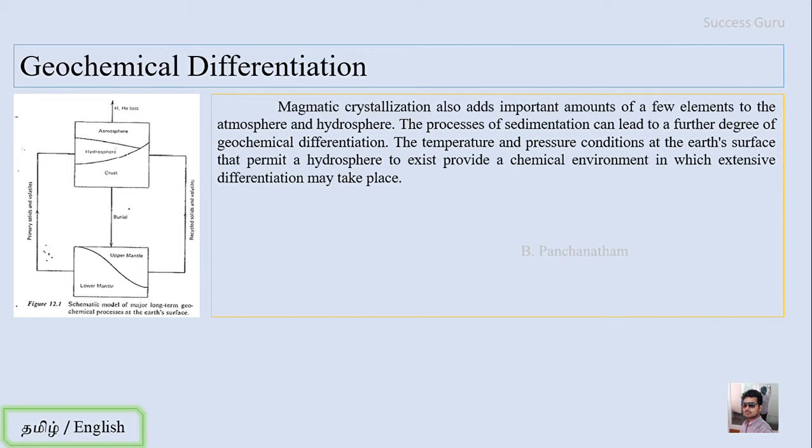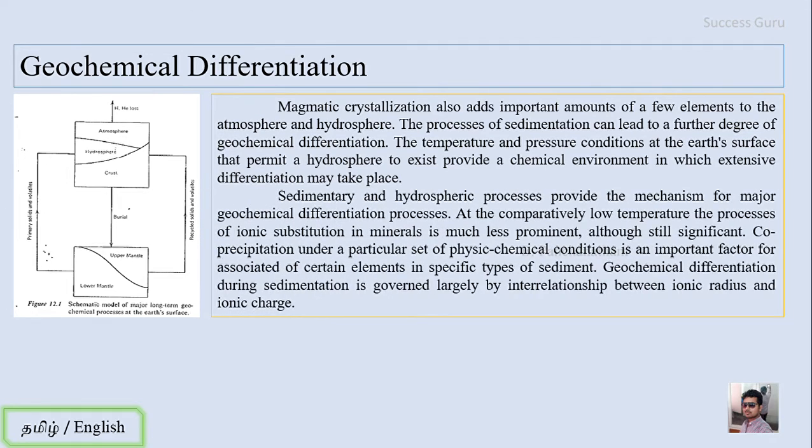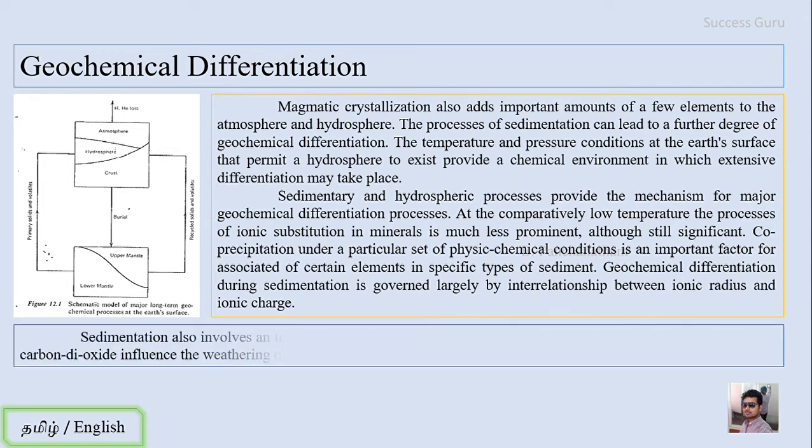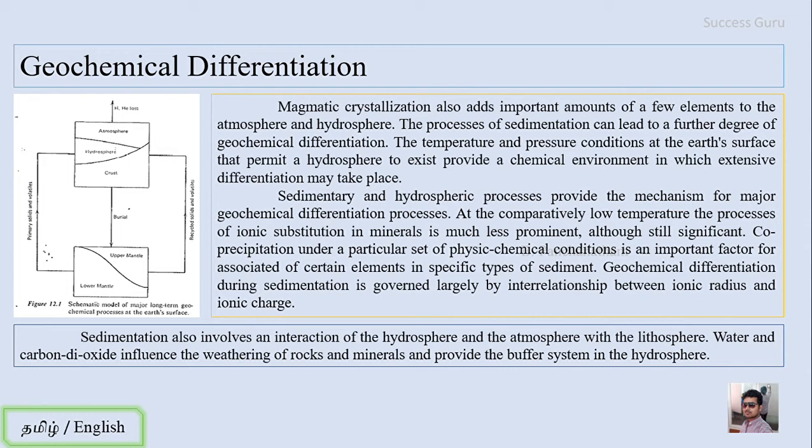The temperature and pressure conditions at the earth's surface that permit the hydrosphere to exist provide a chemical environment in which extensive differentiation may take place. The primary key element for chemical weathering is water. As we discussed in previous lectures in geomorphology, the presence of water actually increases the amount of chemical weathering in any rock. The sedimentary and hydrospheric processes provide a mechanism for major geochemical differentiation at comparatively low temperatures. Water and carbon dioxide influence the weathering of rocks and minerals and provide the buffering system for the hydrosphere.